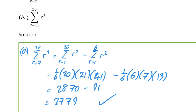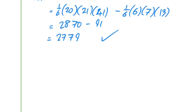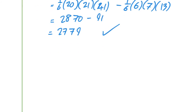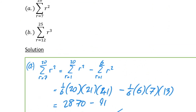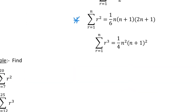The next part asks us to find sigma from r=12 to r=25 of r³. We write this as sigma from r=1 to 25 of r³ minus sigma from r=1 to 11 of r³.